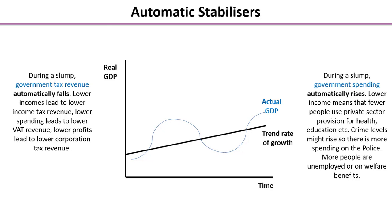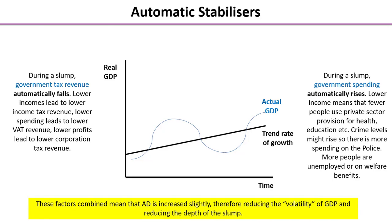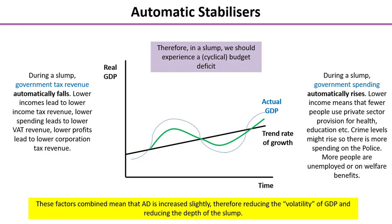As for government spending, it automatically rises during a recession. Lower income means fewer people use private sector provision for health and education. Crime levels might rise, leading to more social problems and perhaps more spending on the police, and more people are unemployed or on other sorts of welfare benefits. The fall in tax revenue and the automatic increase in government spending increases AD slightly compared to where it would otherwise be, again reducing the volatility of GDP.